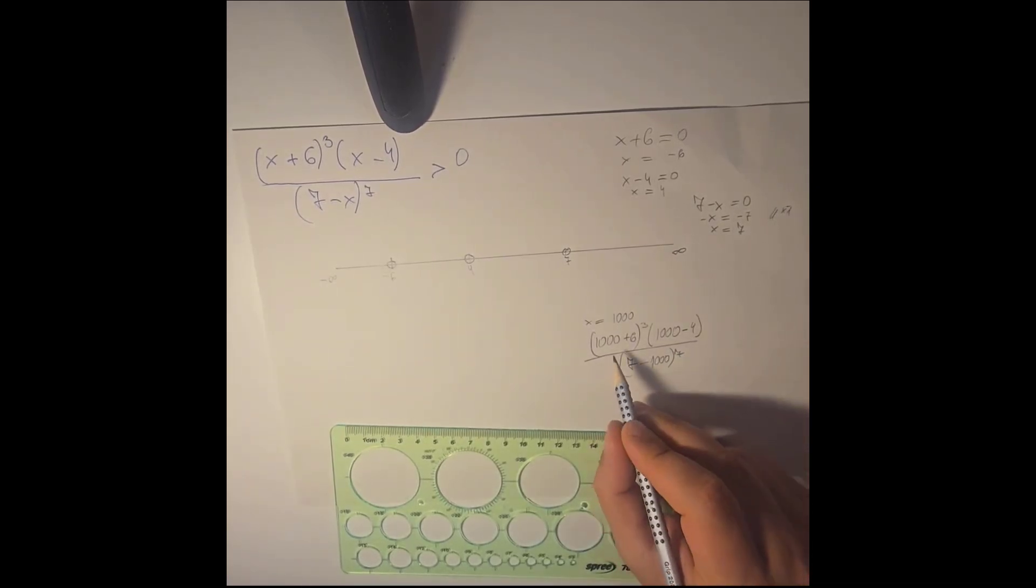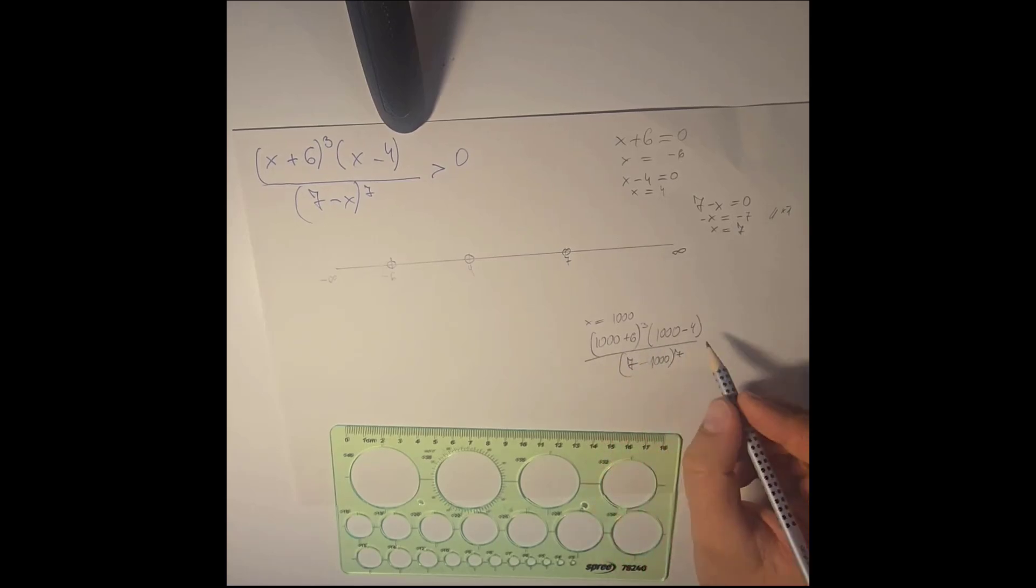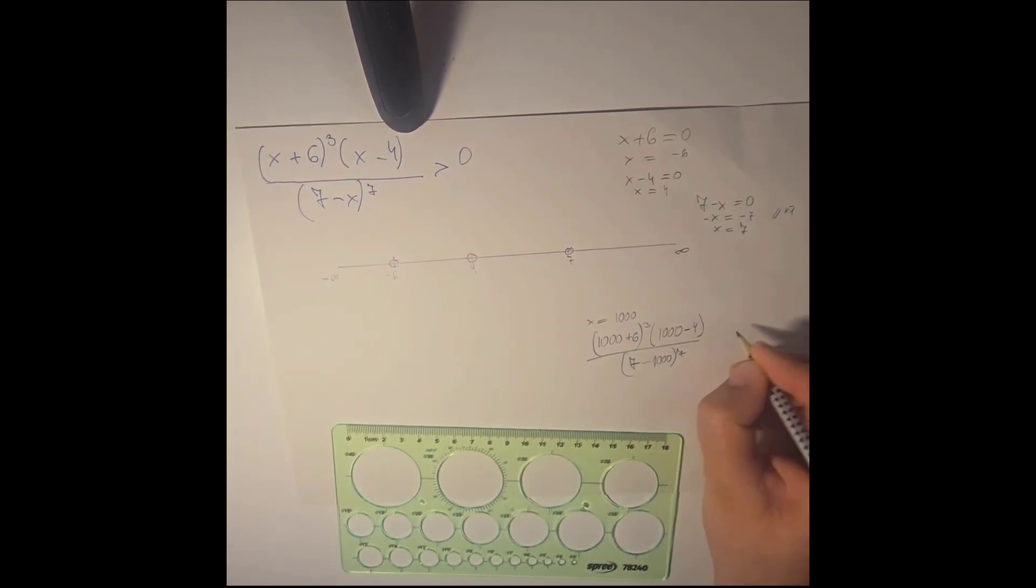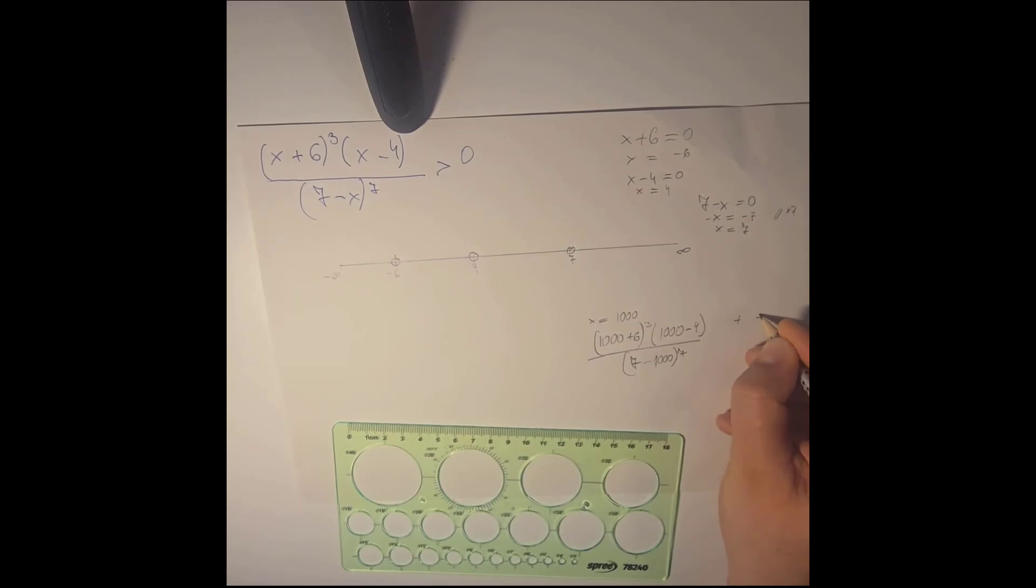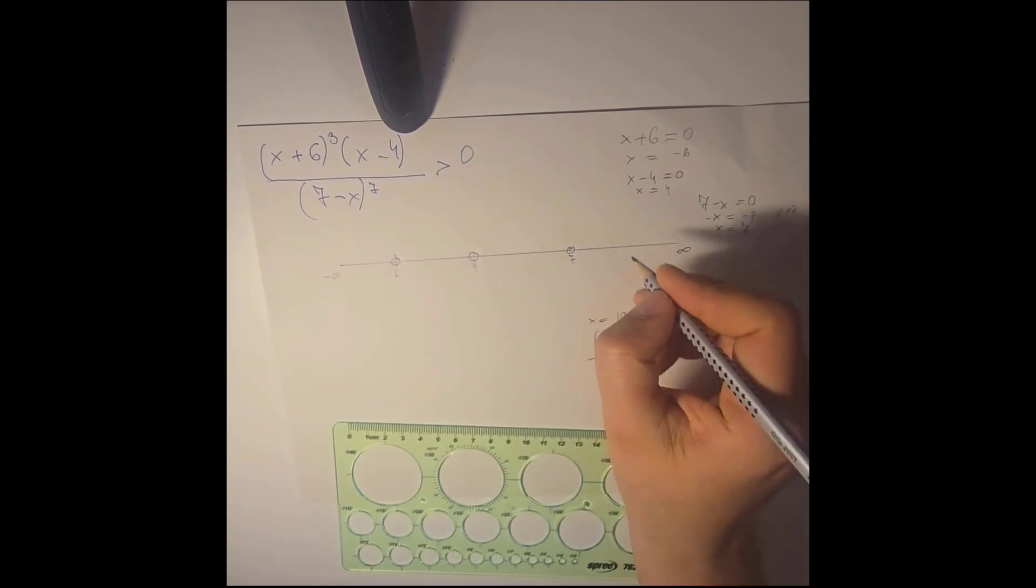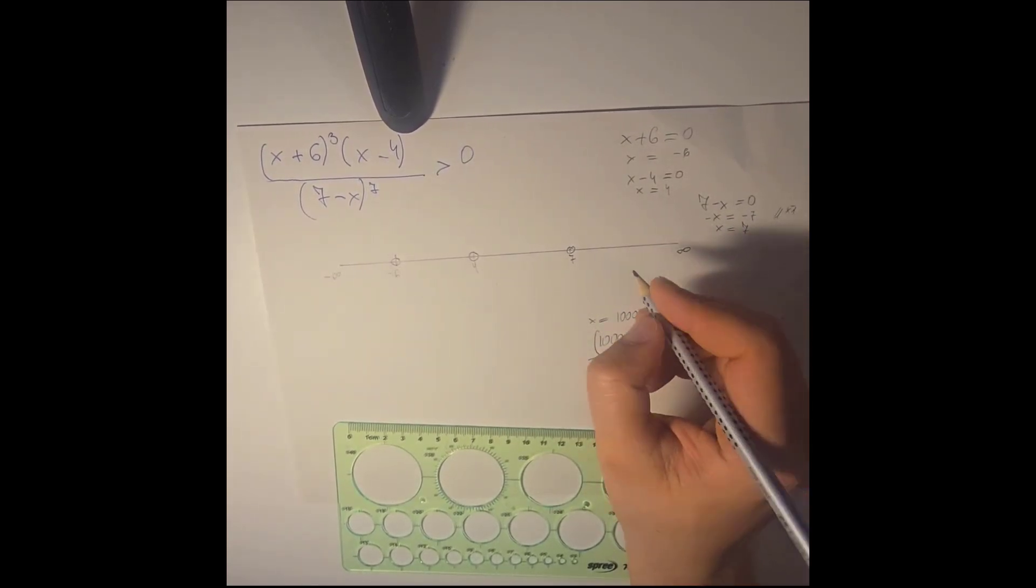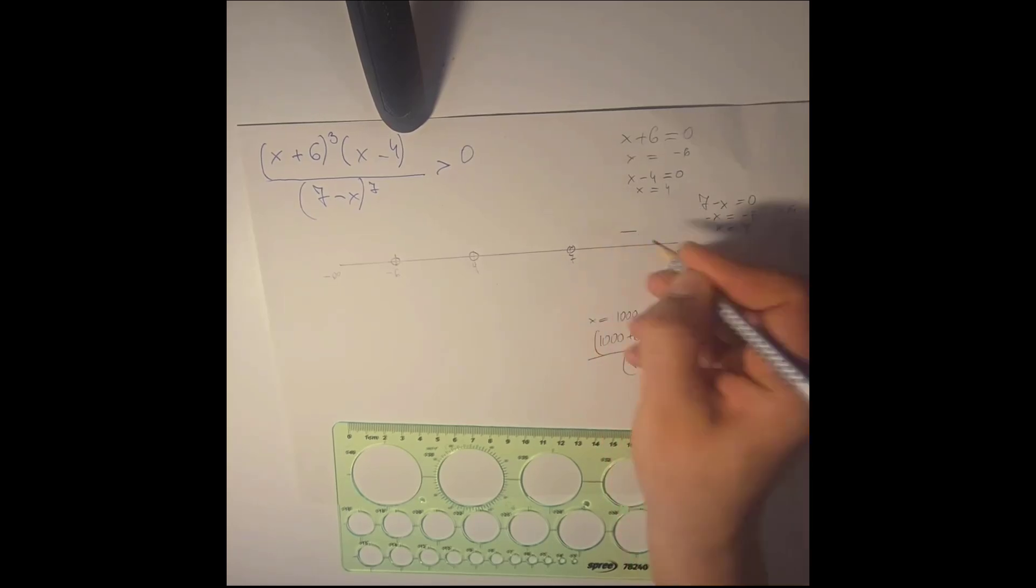7 minus 1,000 unfortunately is a negative number and a negative number powered by 7, it is obvious that it is a negative. 1,000 plus 6 is a positive number times to the power of 3, this is a positive. And we have 1,000 minus 4 which is 996, also positive. So we write a minus, like this.